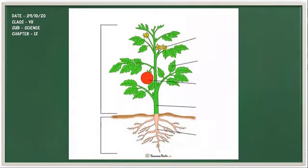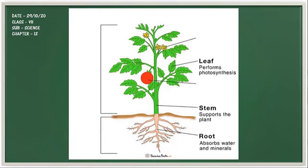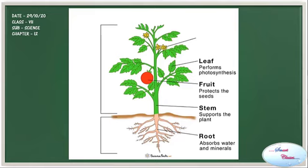How does reproduction happen in plants? The plant consists of leaf, stem and roots. These are the vegetative parts of the plant, which help the plant in reproduction. The plant also has fruits, which contain seeds inside them.